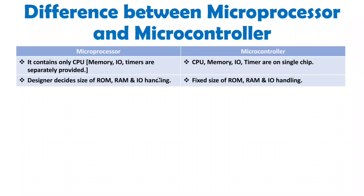When a designer selects a microprocessor, they can decide how much memory can be interfaced and how much input/output handling capacity is used with the given computer system. But with a microcontroller, you have a fixed size of ROM, RAM, and IO on the single chip. With a microprocessor, we can decide how much ROM and RAM to interface — this is a major advantage of microprocessor: the facility of upgradation, which is not possible with a microcontroller.